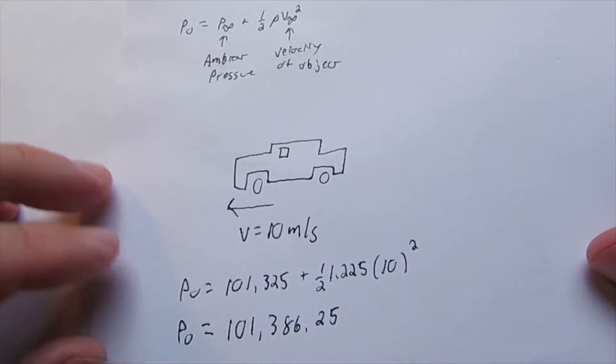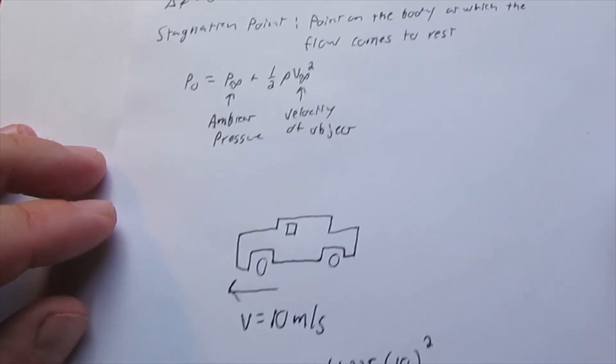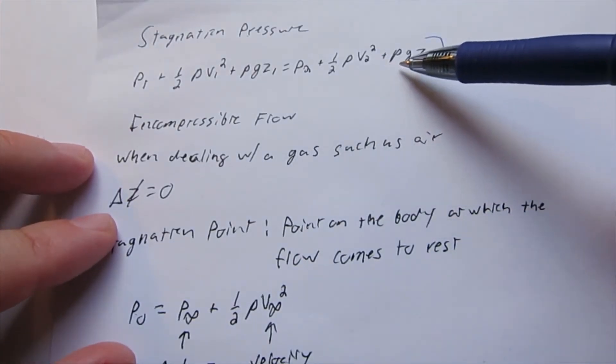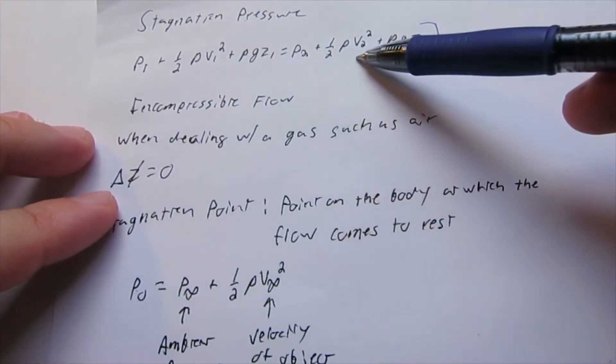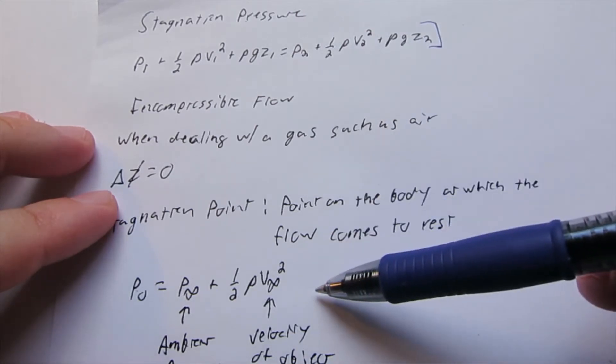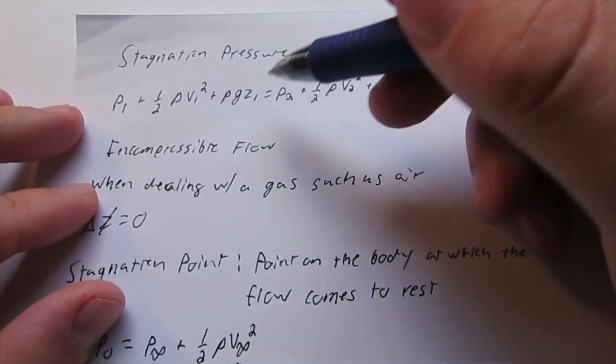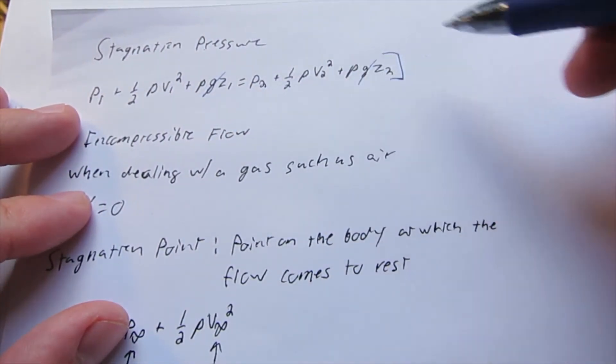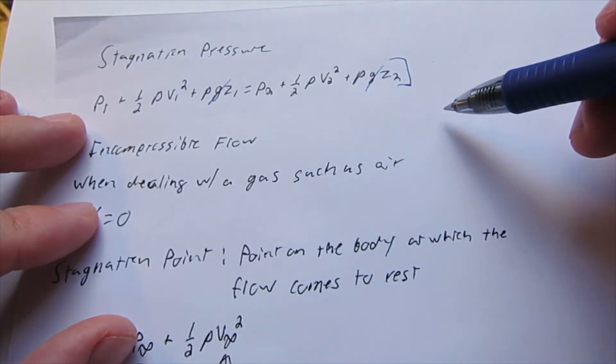To calculate the stagnation pressure, we can look at our equation and see how it reduces. We have our elevations - those can cancel out.